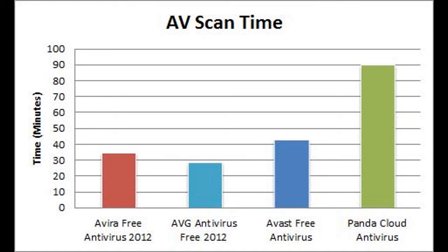As you can see, AVG had the fastest scan time of about 28 minutes, followed by Avira with about 35 minutes, then Avast with about 42 minutes, and Panda with an atrocious hour and a half. So there you have it — fastest scan time goes to AVG.